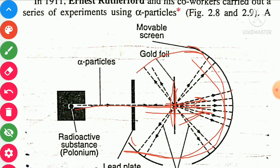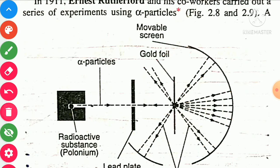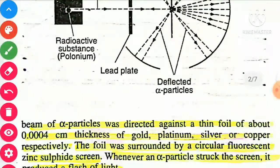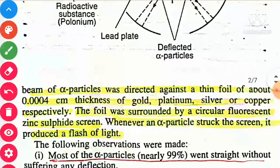A few alpha particles penetrated the gold foil with some deflection in their path. But very few particles deflected at an angle greater than 90 degrees, or came back in the same direction at 180 degrees. The beam of alpha particles was directed against a thin foil of about 4 × 10⁻⁴ cm, or 4 × 10⁻⁷ m, of thickness — gold, platinum, silver, or copper. This foil was surrounded by a circular fluorescent zinc sulphide screen.